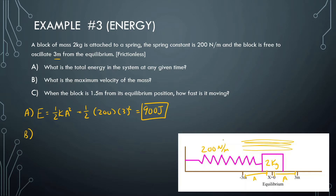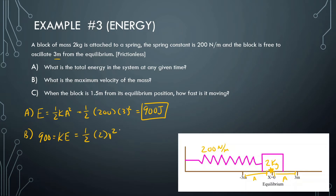Part B is asking: what is the maximum velocity? The maximum velocity is at the equilibrium position, because at that point the spring is not stretched or compressed and it's just moving very quickly. So we can say all the energy, which is 900 joules, is equal to all the kinetic energy: one-half the mass (which is 2) times v squared. Solving for v: the square root of 900 gives us 30 meters per second.